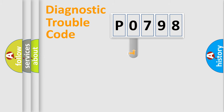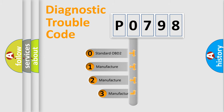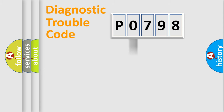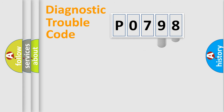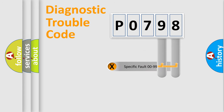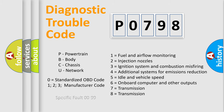This distribution is defined in the first character of the code. If the second character is expressed as zero, it is a standardized error. In the case of numbers 1, 2, or 3, it is a manufacturer-specific error. The third character specifies a subset of errors. The distribution shown is valid only for the standardized DTC code, and only the last two characters define the specific fault of the group. This division is valid only when the second character is zero.